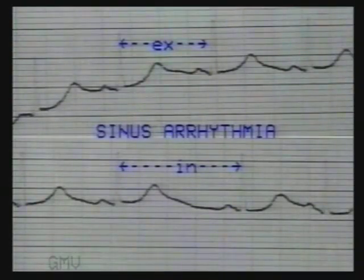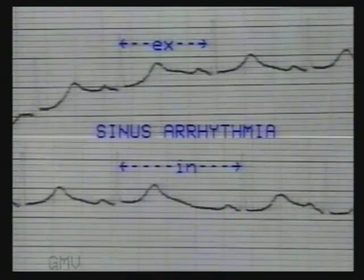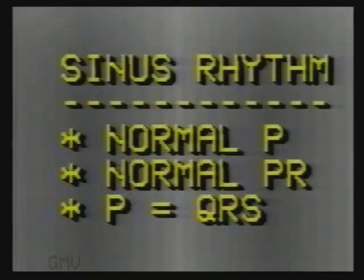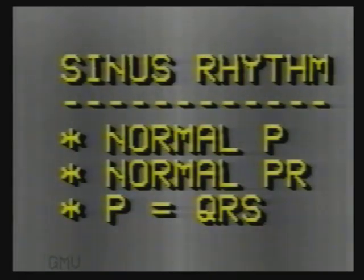So now we know the features of normal sinus rhythm. Number 1, the P wave morphology should be normal. Number 2, the PR interval should be normal and constant. And number 3, each P wave should be followed by a QRS complex.